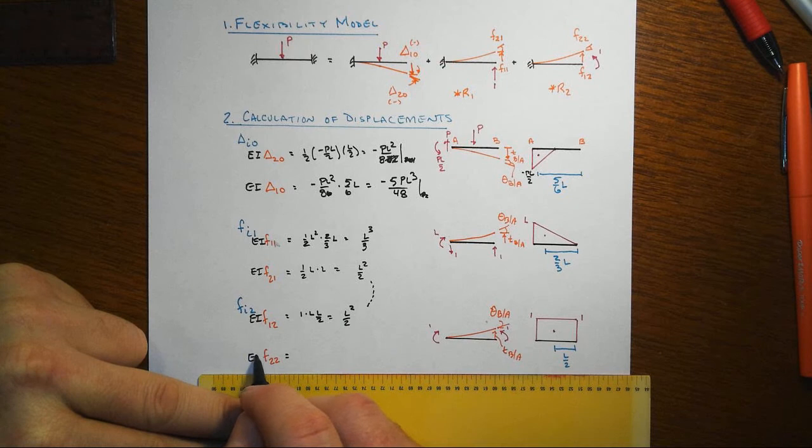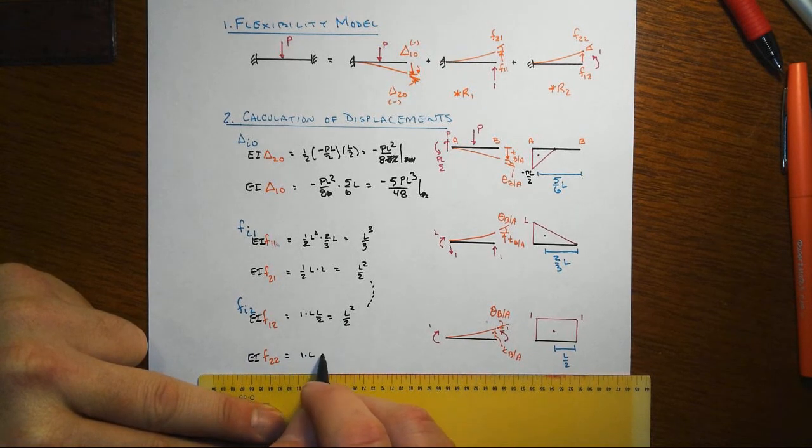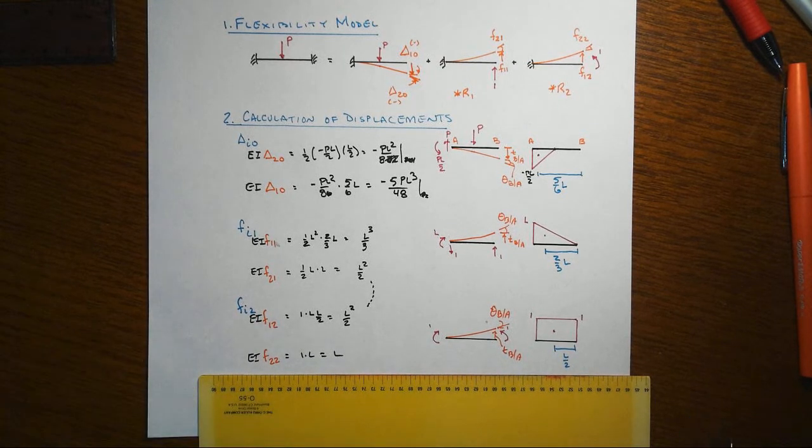And then for F22, that's just the area, so that's 1 times L for that one.